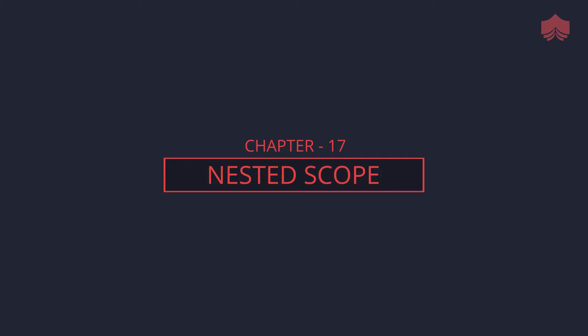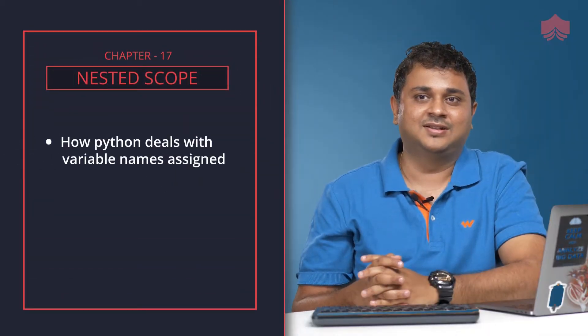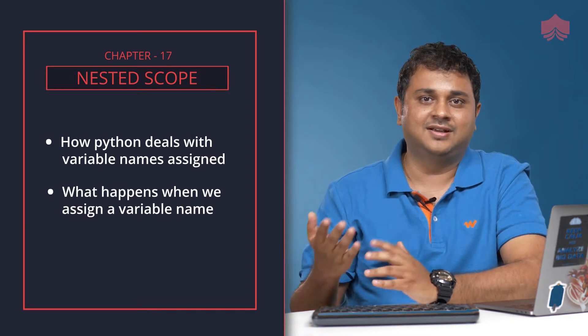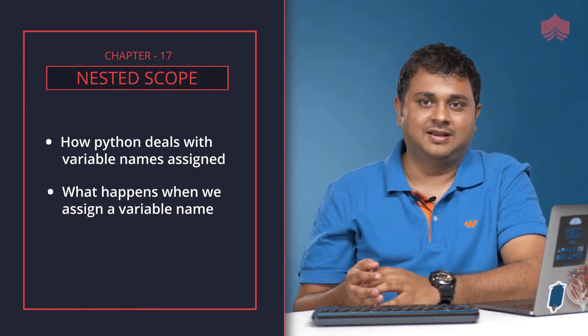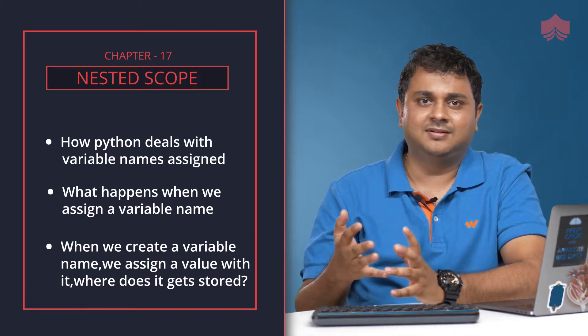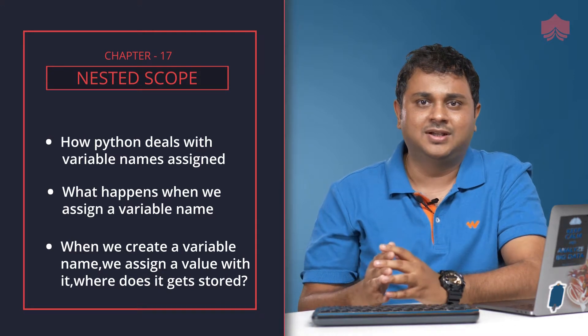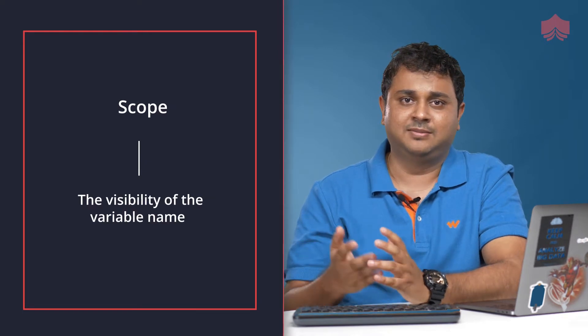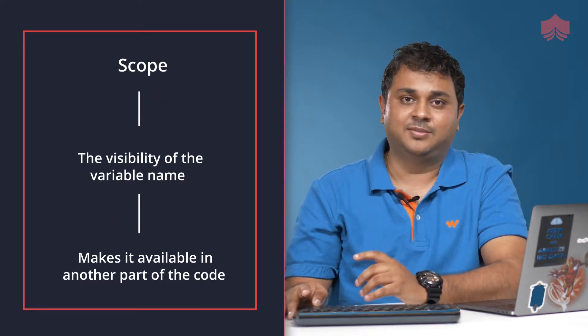Now that we've gone over writing our own functions, it's very important we understand how Python deals with variable names we assign. What exactly happens when you assign a variable name, and when you create this variable name there is something you assign a value with it — where does it get stored? The place where it gets stored is called a namespace. Variable names also have what we call a scope, which determines the visibility of that variable name and makes it available in other parts of your code.